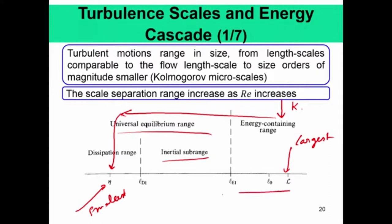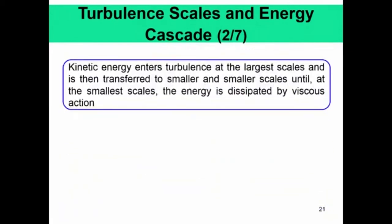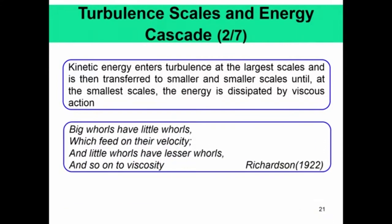The demarcation between the energy containing range and the inertial sub-range is called LEI, and the demarcation between the dissipation range and the inertial range is called LDI. Kinetic energy enters turbulence at the largest scales and is then transferred to smaller and smaller scales until, at the smallest scales, the energy is dissipated by viscous action. This concept was realized by Richardson, much earlier than Kolmogorov, and he penned this poem: 'Big holes have little holes which feed on their velocity, and little holes have lesser holes, and so on to their viscosity.' A nice poem that conveys this whole picture to the general audience.